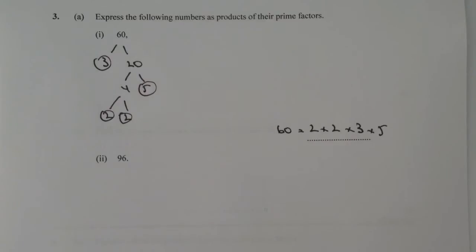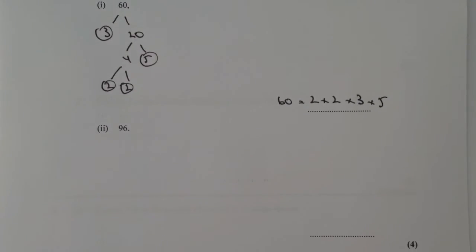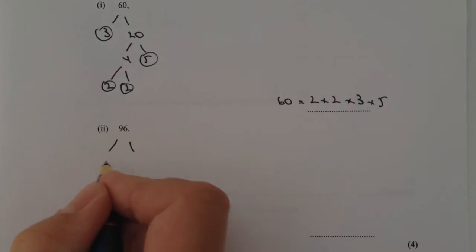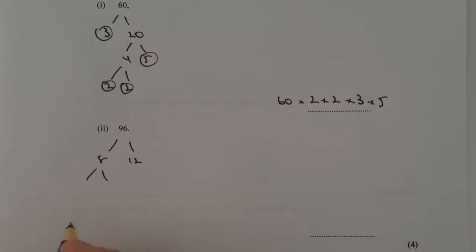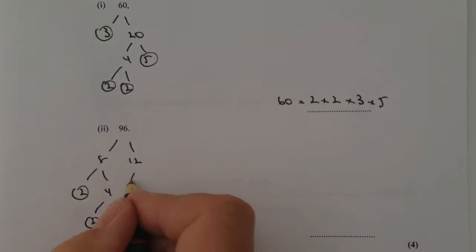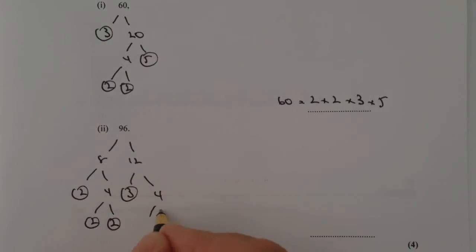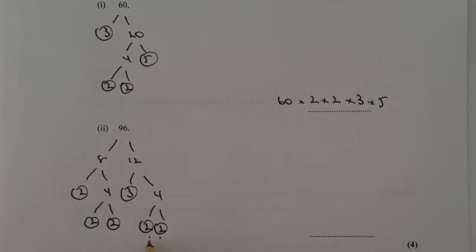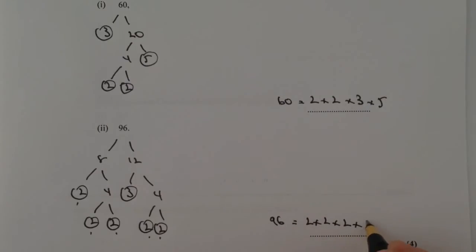It's very important to keep things in ascending order — you'll see why in part B. On to 96: it splits into 8 and 12. 8 gives 2 and 4, then 2 and 2. 12 gives 3 and 4, then 2 and 2. There are quite a lot of 2s — put a dot underneath to check you have the right amount. That gives 5 twos, so 96 equals 2 times 2 times 2 times 2 times 2 times 3.